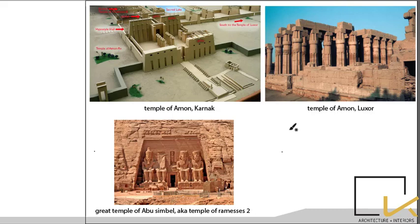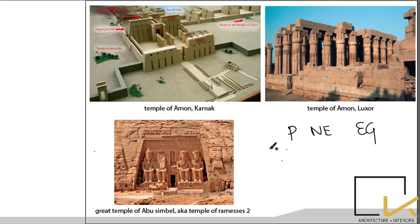So far we have covered prehistoric, Near East, and Egyptian architecture. Remember the timeline — it is very important and has been tested in GATE 2020. Learning architecture styles according to the timeline keeps things clear rather than mixing up styles like Christian, Gothic, and Romanesque. Please learn the timeline first, then watch the remaining videos.